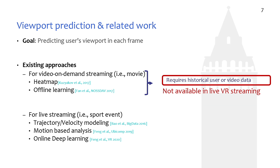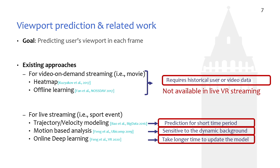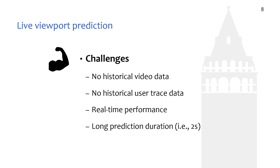Other methods targeting live streaming systems predict by estimating the trajectory of the user's head movement, analyzing the motion information of the video content, or using online deep learning. However, they still have limitations. The velocity-based estimation method cannot maintain high prediction accuracy for a longer duration. The motion analysis-based method will be impacted by the dynamic background of the video. The online deep learning method takes a longer time to update the model, so it cannot adapt to the user's new preferences quickly. It is therefore very challenging to predict the user's viewport in a live streaming system where there is no historical data, while also meeting real-time performance requirements.